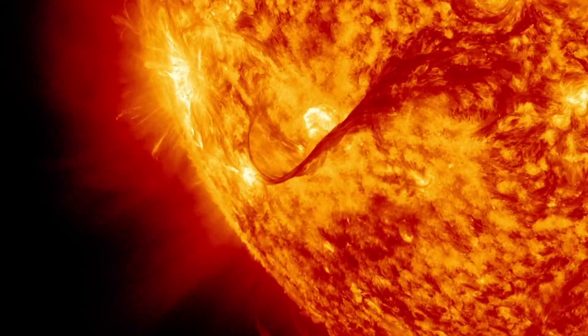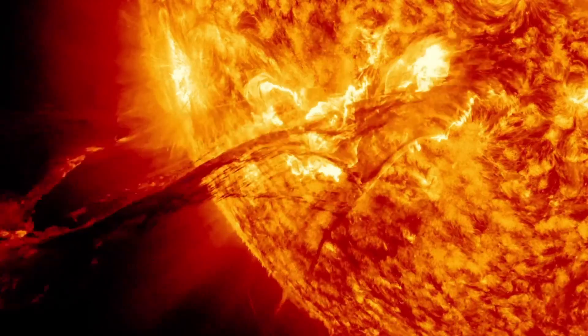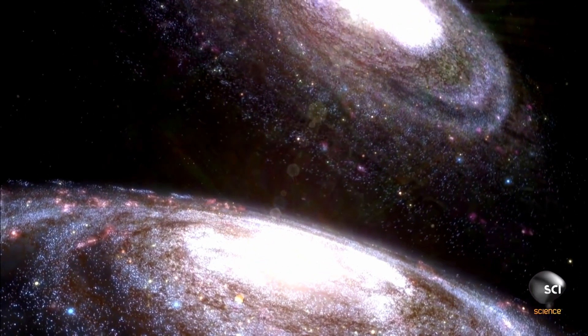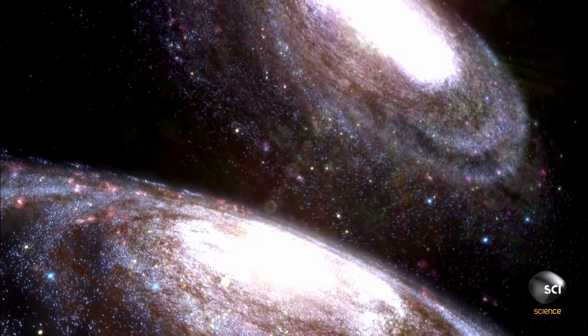Every second Sun loses about 5.5 million tons of mass. Every second Andromeda Galaxy comes 110 kilometers near Milky Way Galaxy.